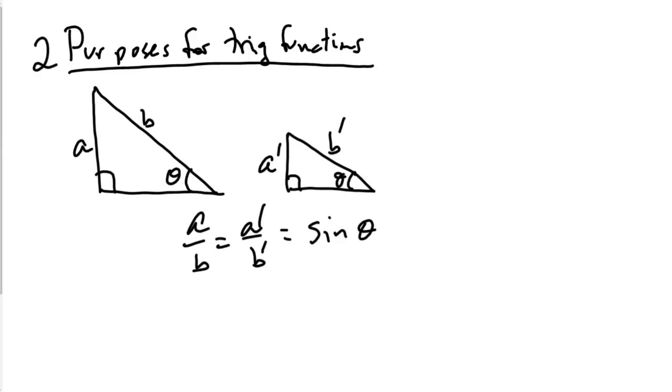So the purpose of this trig function here, or this purpose of the trig functions here, is to really take advantage of that. There is only one sine, say, of 53 degrees, or one sine of, say, pi over phi radians.